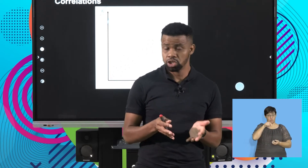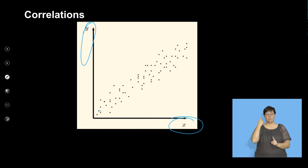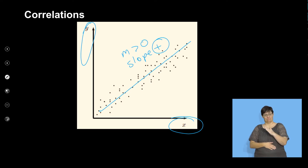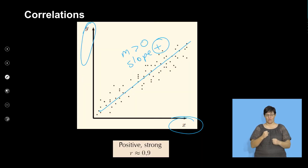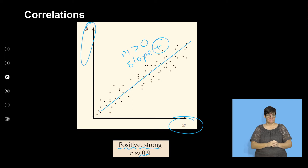We know it's positive because we can draw a straight line with a positive gradient — the slope M is bigger than 0. So it's positive, going up. This is strong positive correlation. The correlation is approximately 0.9. Would you have guessed that? I could have guessed 0.8 — and the correct answer is actually 0.9. If you got 0.8, that's pretty close, that's okay.